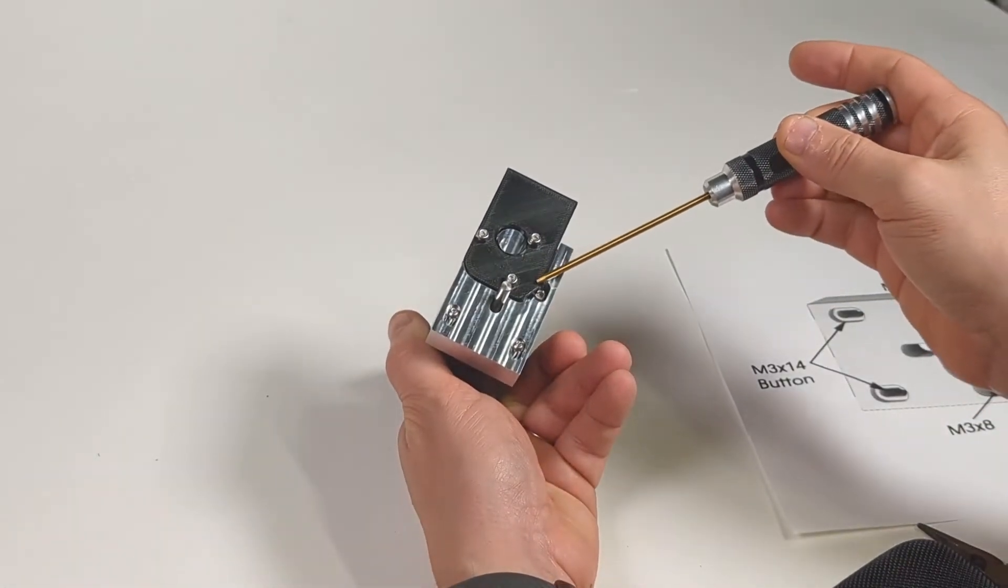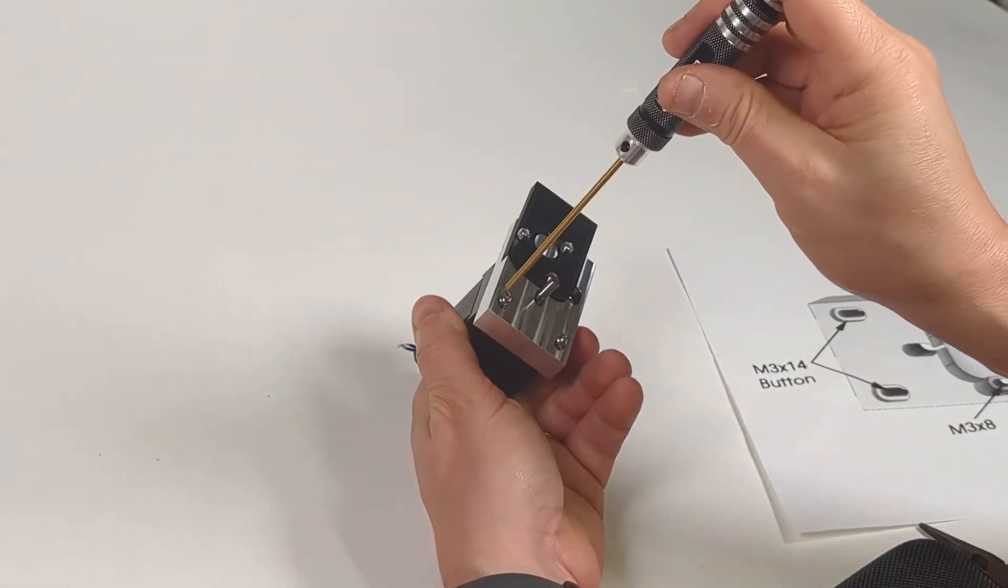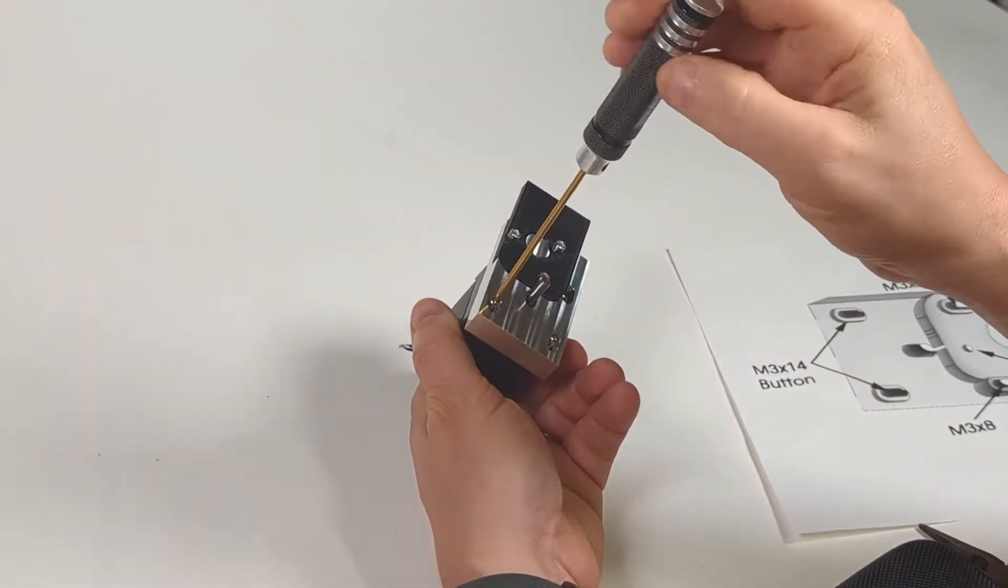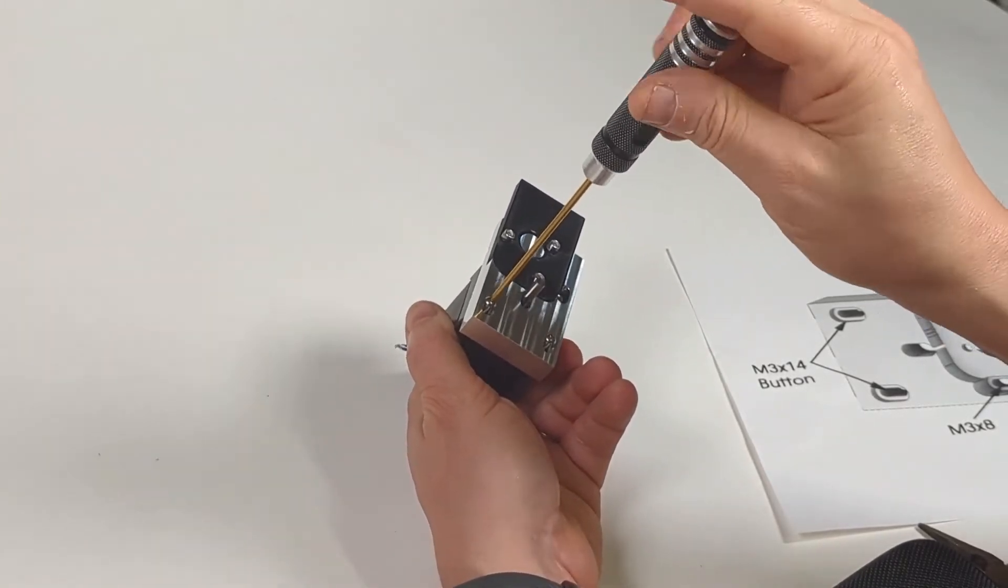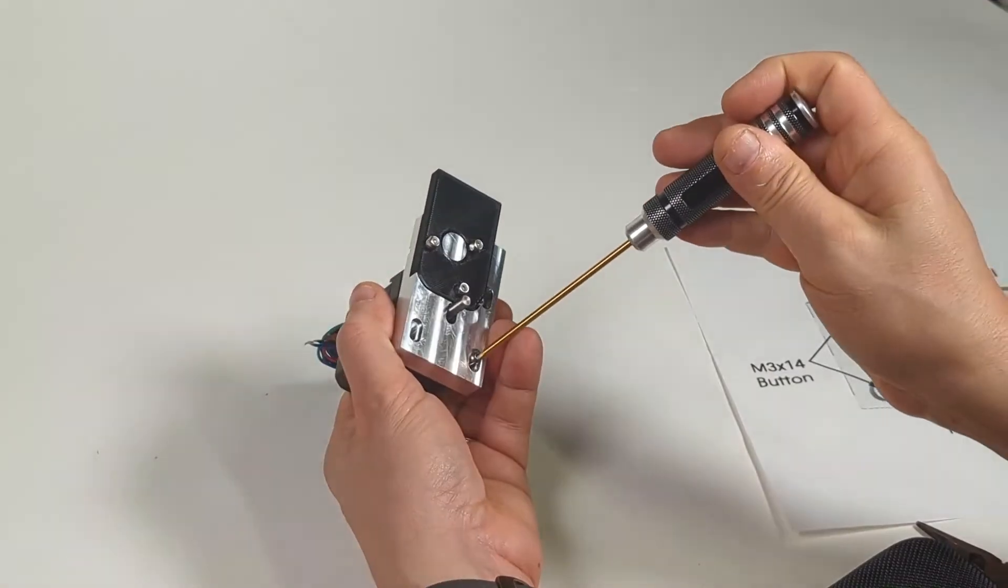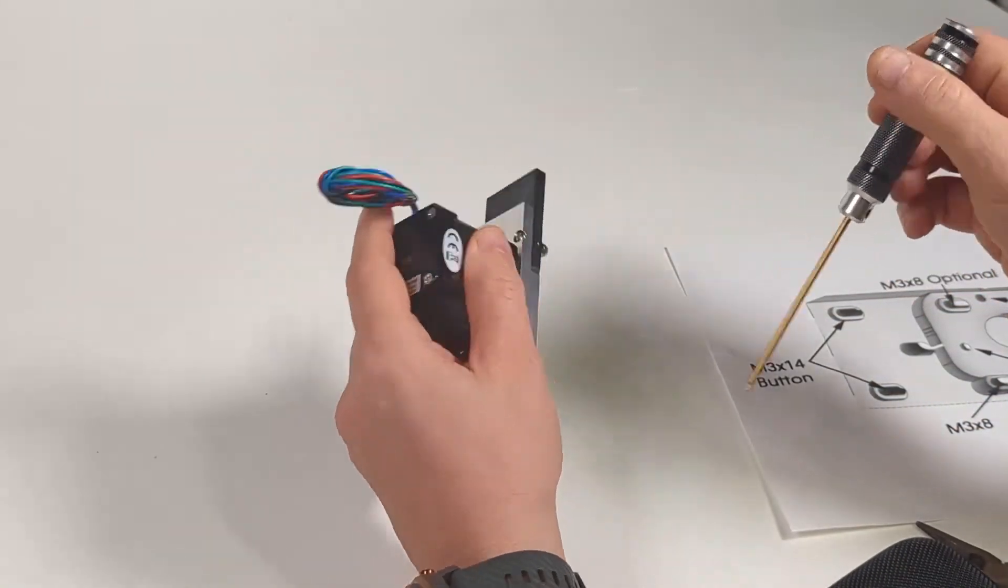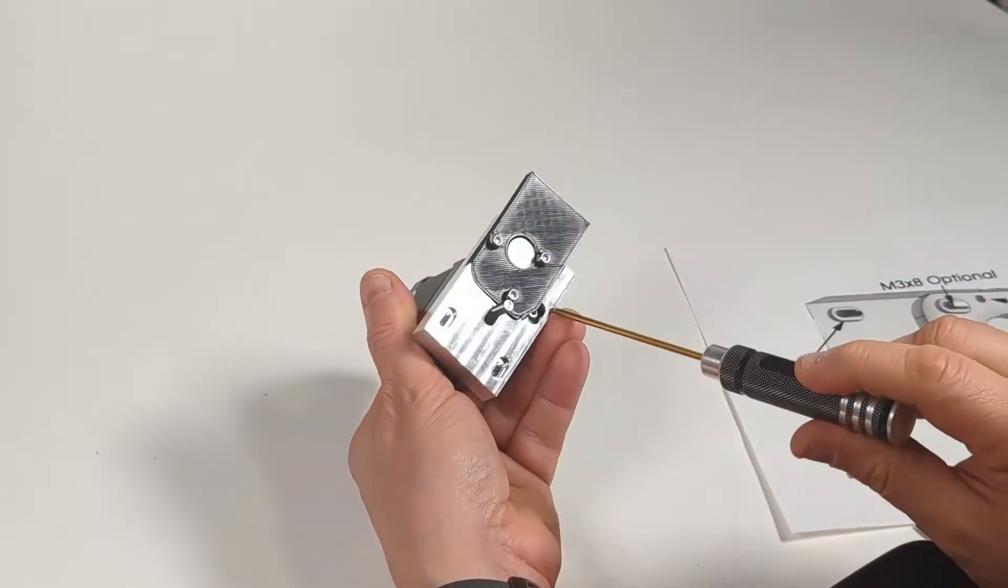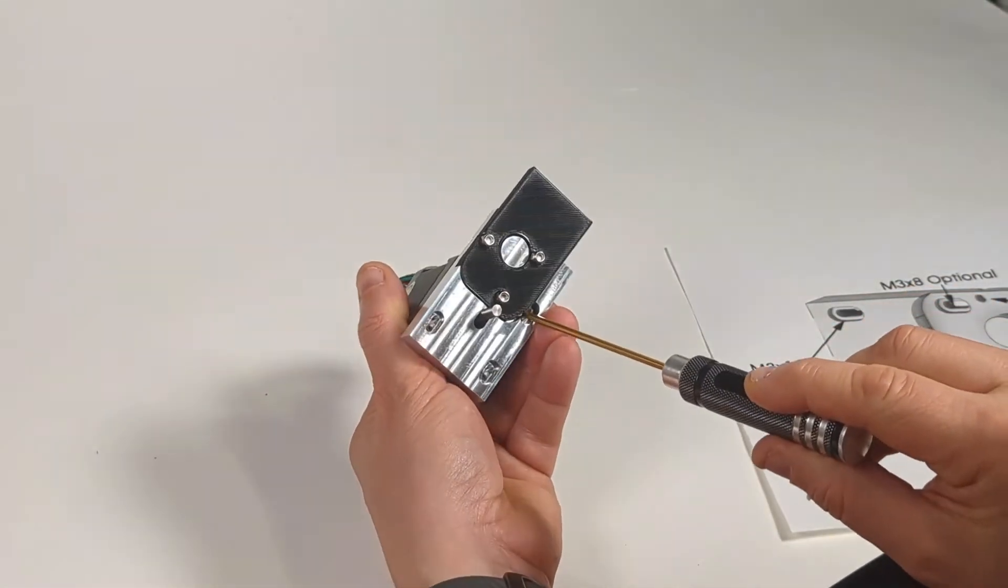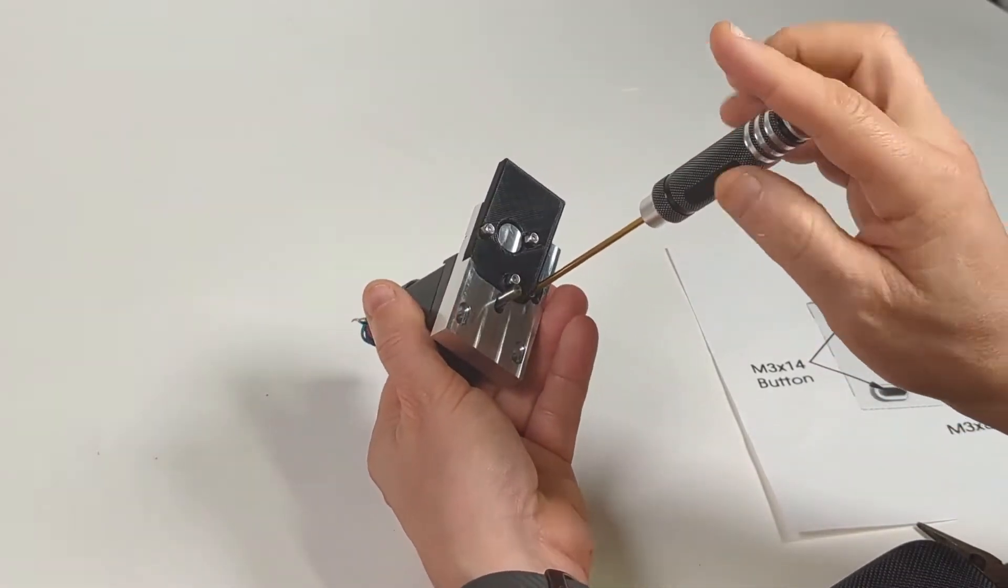So you got to take these screws out first. So let's go ahead and do that. We're going to disassemble and then I'll reassemble. Okay, so these two screws on the outside are the m3 14s.